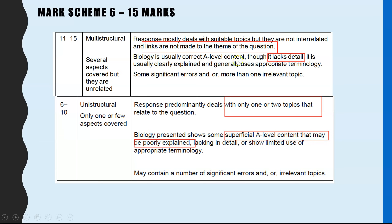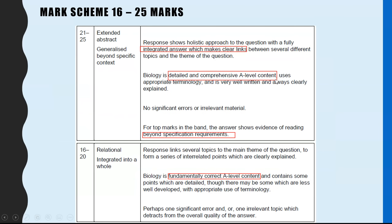The biology is usually correct A-level, but it might lack some detail. It's usually clearly explained and you've got some good use of terminology. To be at 11, you might have some significant errors or more than one irrelevant topic.